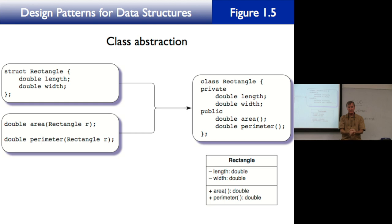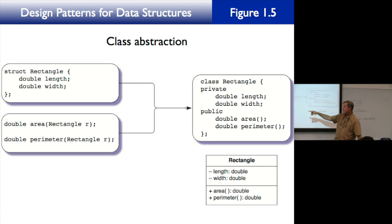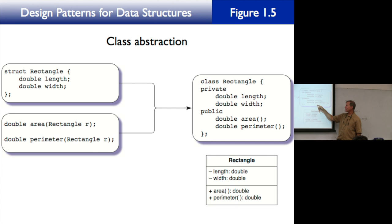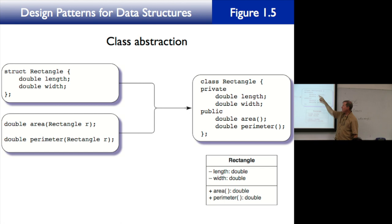In the figure on the left, we have a struct Rectangle with length and width, plus functions area() and perimeter() that return double. When we combine these together, instead of saying struct we say class — that's the convention when you combine data with operations. Now length and width are private attributes of the class, and area and perimeter are public operations.